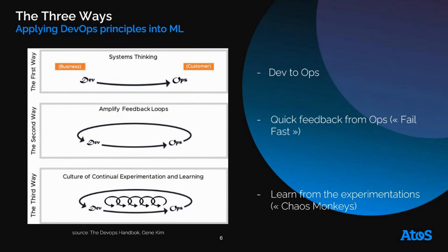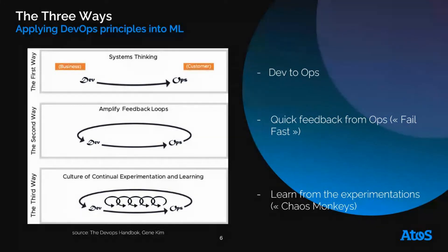The Three Ways is the fundamental concept behind DevOps and the key to making your business win. The first way is about quickly putting code into a production environment. The goal is to set production performance as the only valuable reference for comparison, because this is what the customer is going to see. The second way is about using automation via CI/CD to get quick feedback from Ops. The Spotify CEO calls that 'fail fast': if something goes wrong in production, you fix it ASAP, but you learn from it in order to improve the feature.